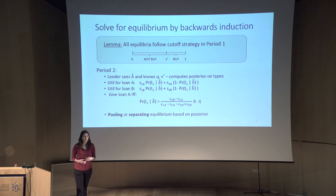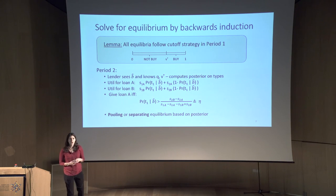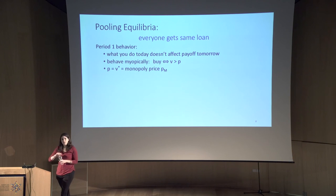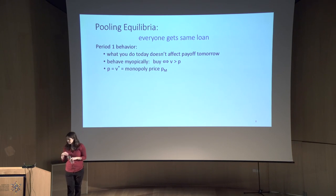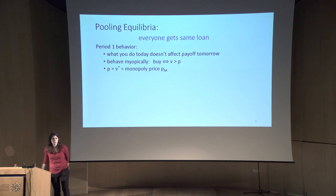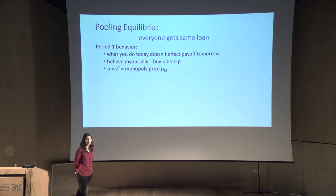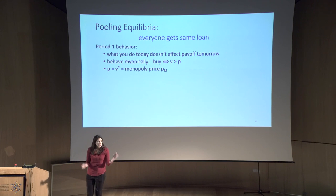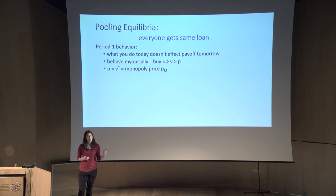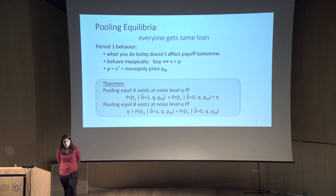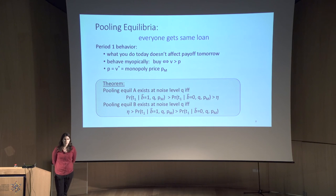The bank knows: if I offer loan A, I get this bonus times the posterior probability that the consumer is the high type, plus this bonus if the consumer is not. They can compute whether it's better to show the good loan or the bad loan. Rearranging terms, this is just a condition on the lender's posterior being above some threshold value eta that depends on these four payoff terms. From now on, everything is phrased in terms of eta, since that's what describes how the lender decides which loan to show. Depending on the lender's posterior, we're either in a pooling or a separating equilibrium.